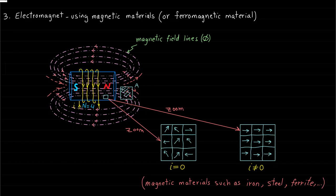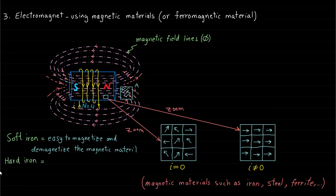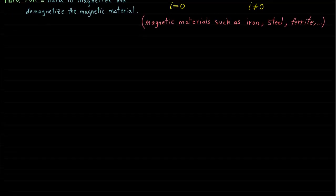When the domains are aligned, we say the magnetic material is magnetized. It is also worth mentioning that the magnetized magnetic material can be demagnetized — we will explain this concept later in a different lecture. Furthermore, if the magnetic material is magnetized and demagnetized easily, we call it soft iron; otherwise, we call it hard iron.